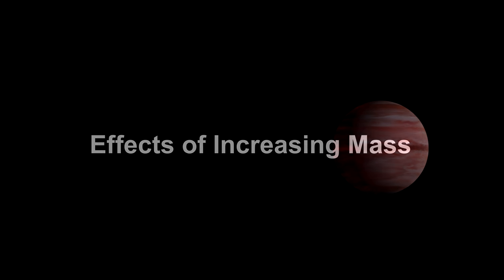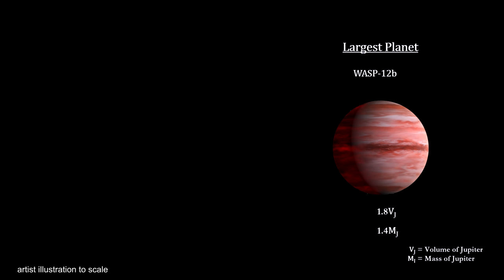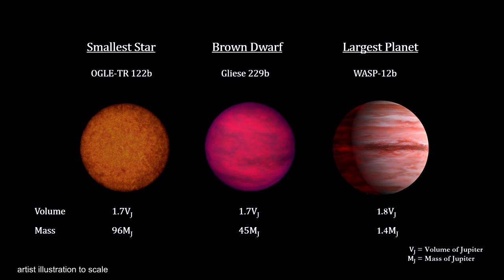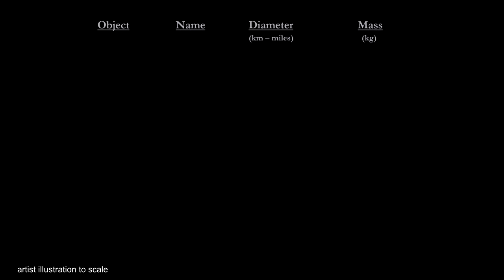Because giant planets don't burn hydrogen, brown dwarfs have more in common with them than they do with stars. To understand how we distinguish a brown dwarf from a low-mass star or from a high-mass planet, we'll examine the effects of increasing mass on celestial objects, starting with rocks.